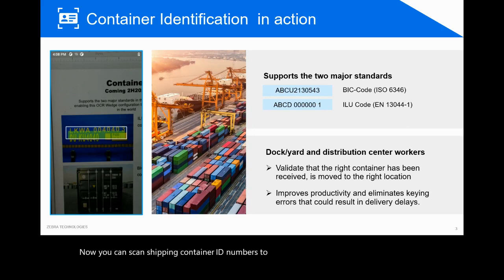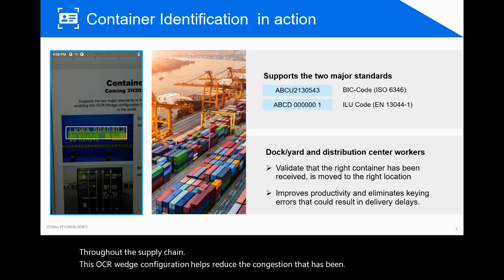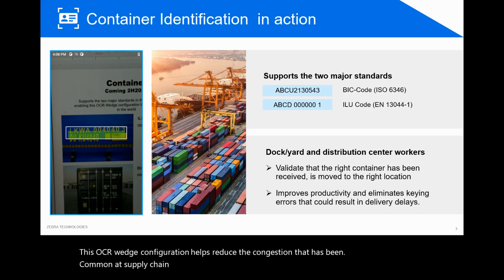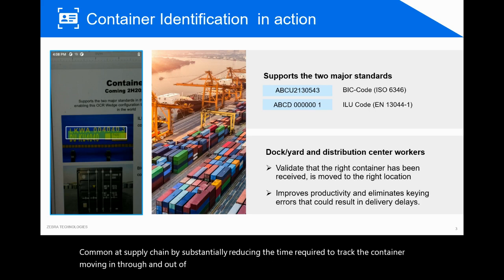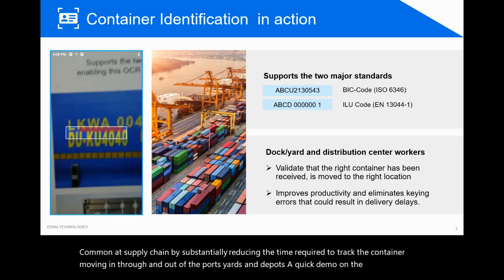You can scan shipping container ID numbers to streamline the processing and tracking of bulk goods throughout the supply chain. This OCR Wedge configuration helps reduce the congestion common at supply chains by substantially reducing the time required to track containers moving in, through, and out of ports, yards, and depots. Here is a quick demo.